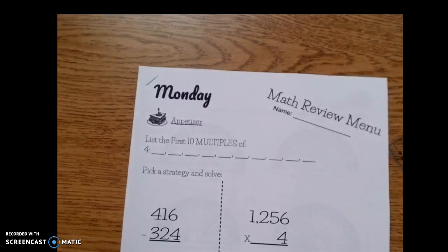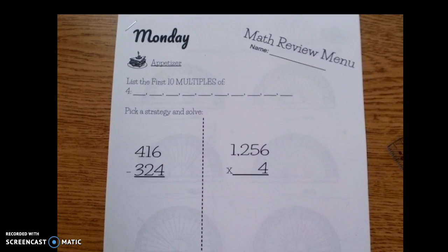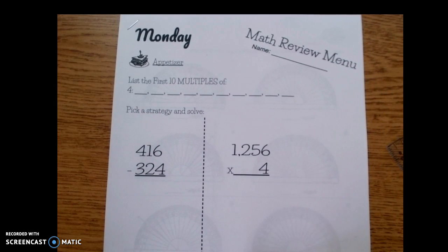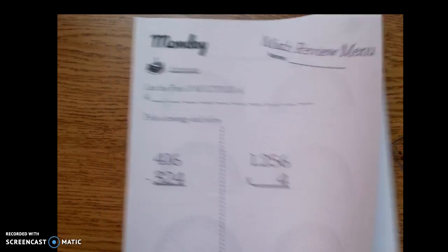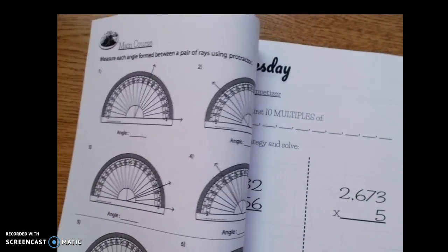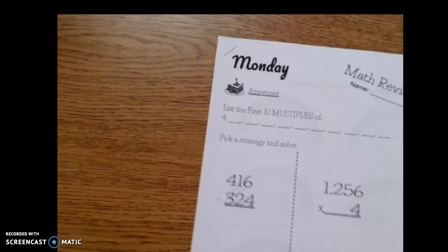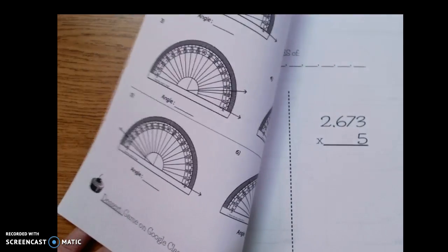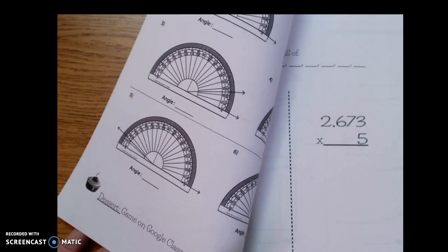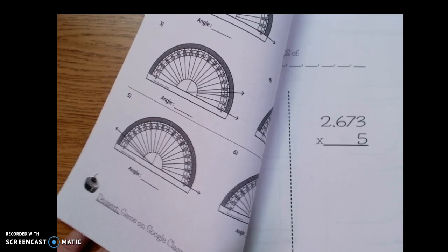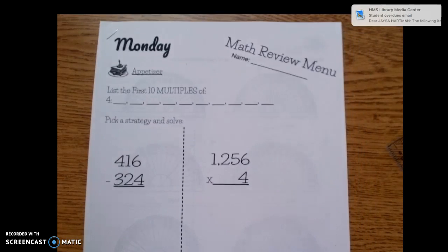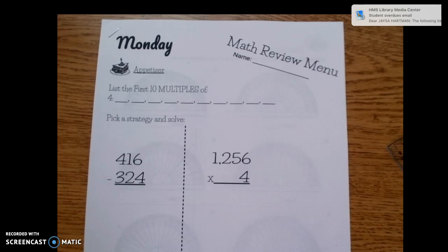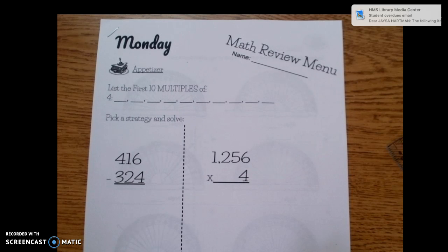So each day you're going to go through those. First, the appetizer is always going to be review. The main course is going to be new information or review information, and then the dessert is done only if you get done with everything else and it's usually going to be a game that you will have a link to on Google Classroom.